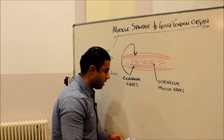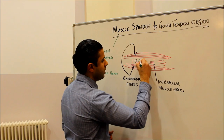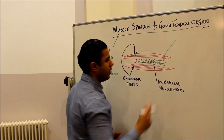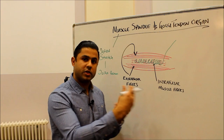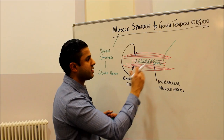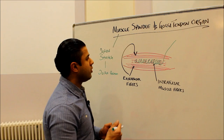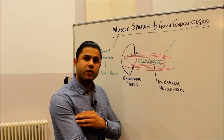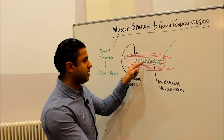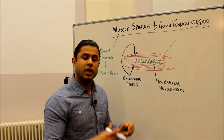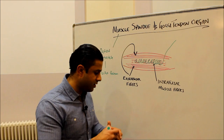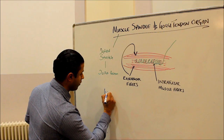Going back to the intrafusal muscle fibers — they don't contain actin and myosin but they are wrapped with nerve fibers, which are sensing the stretch within that intrafusal fiber. When we have a lengthening of the muscles — if I lengthen my arm, we'd feel the stretch across the bicep — that stretch is detected by the intrafusal fibers, the muscle spindle, and it sends a signal to the spinal cord. In the spinal cord we have what are known as interneurons.